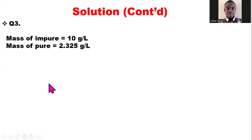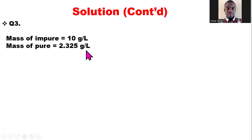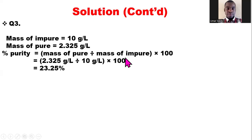For question three, we calculate the percentage purity of the amino acid. The mass of the impure amino acid weighed from that old bottle is 10 grams per liter. The mass of pure amino acid, calculated from question two, is 2.325 grams per liter. Percentage purity = (mass of pure / mass of impure) × 100 = (2.325 / 10) × 100 = 23.25%. This is the percentage purity of the amino acid.